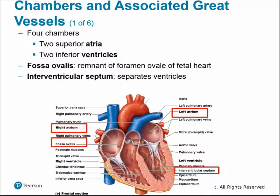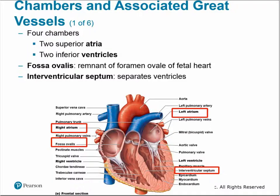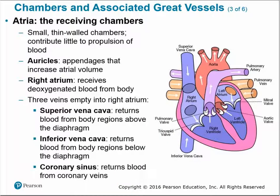The heart consists of four chambers: two receiving chambers — the atria — and two pumping chambers — the ventricles. The fossa ovalis is a remnant of the foramen ovale of the fetal heart; while the baby is in the womb and the lungs aren't operating, blood bypasses the pulmonary circuit through this fossa ovalis. The interventricular septum separates the two ventricles. The atria also have auricles, which are appendages that help increase atrial volume.